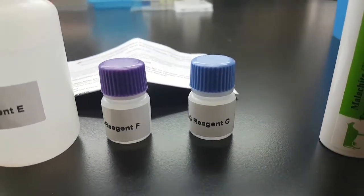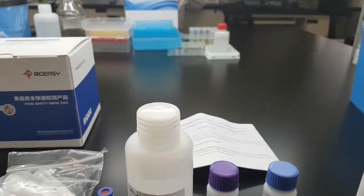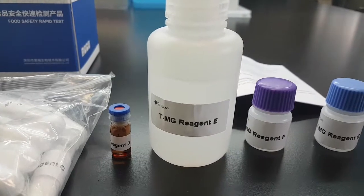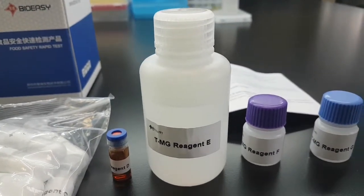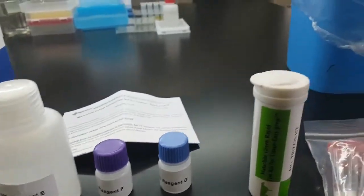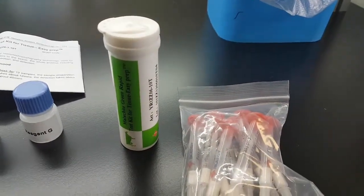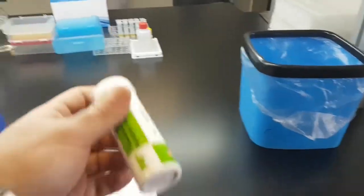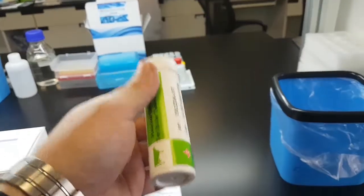What is important to note is that reagent E is ethyl acetate. This covers all the reagents. We also have ten solid phase columns, a tube with ten red micro wells, and ten test strips.